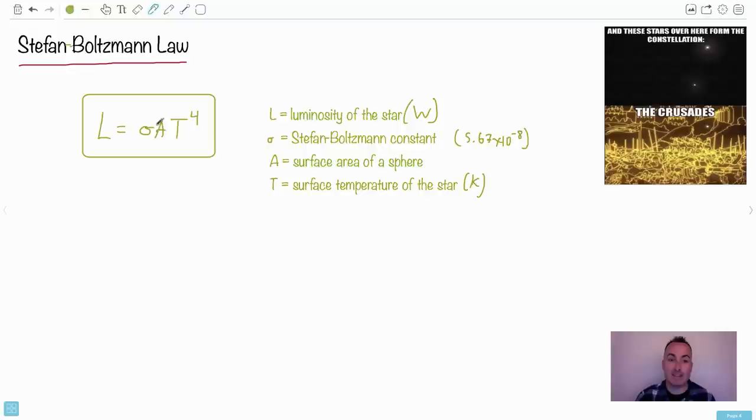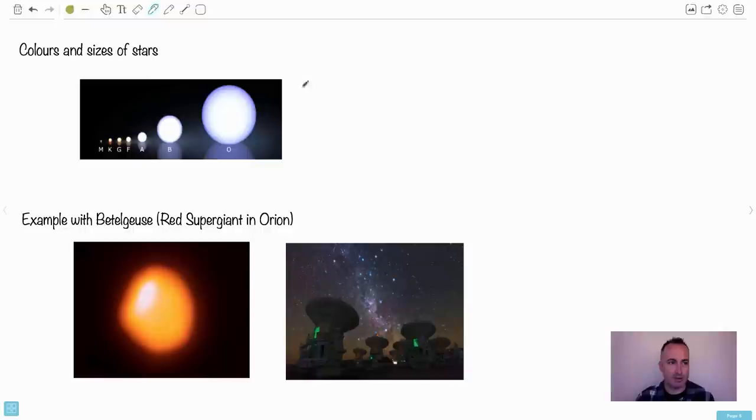And then we have surface area of a sphere. That's what this A is. The surface area of a sphere is on your new data booklet. There was an older version that didn't give you this. Now in the updated version, you get this. It's 4 pi r squared. That has to do with the radius of the star itself. This can tell you the size of the star.